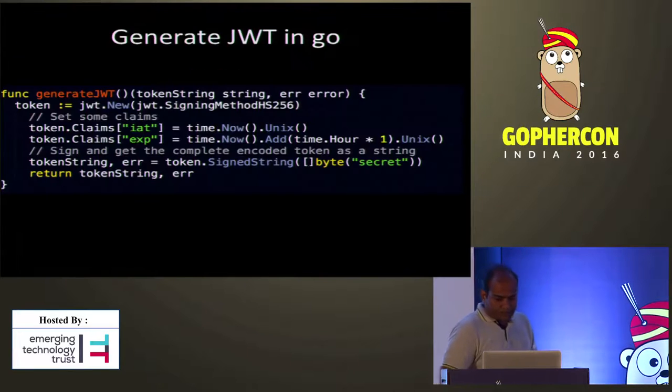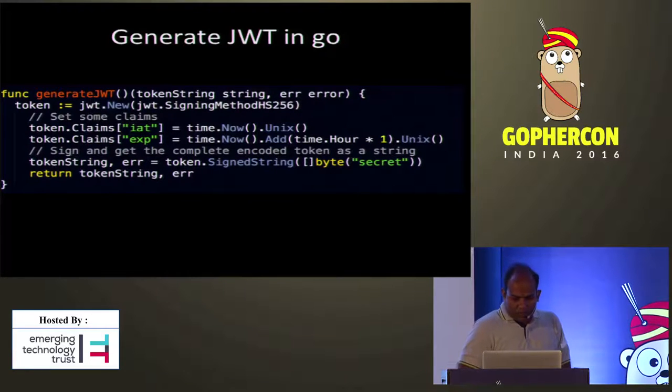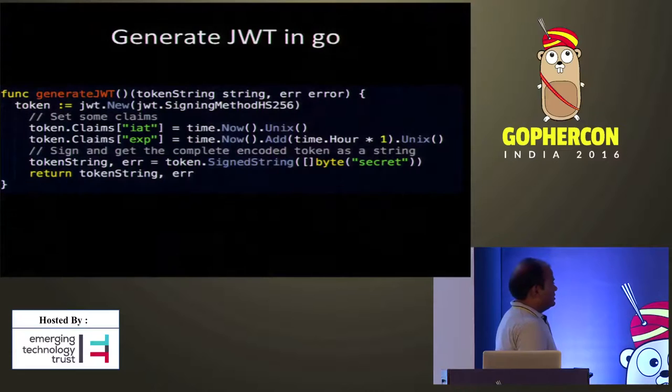The code for this is very simple. First, you create a token using jwt.New. To use JWT, you need the jwt-go package. jwt.New with the signing method HS256 creates the header part. Then we set some claims like IssuedAt time and expiry time — the expiry time is one hour, so the token is valid from generation time for only one hour. That's the payload part. And we sign it with a secret. That's how a token is created.